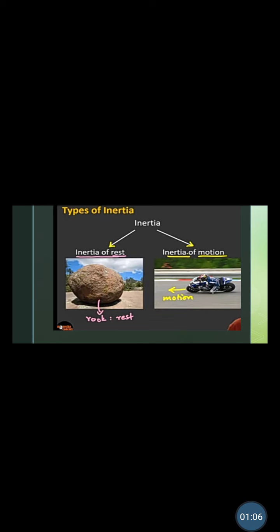Types of inertia: Inertia of rest. See picture of rock. Rock is at rest, so it is having inertia of rest. In second picture there is a racing bike that is in motion, so it is example of inertia of motion.